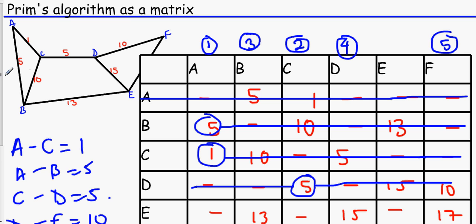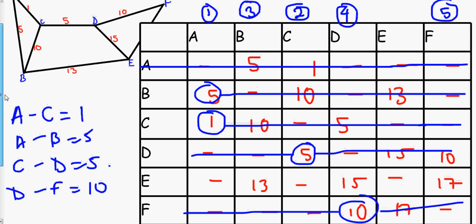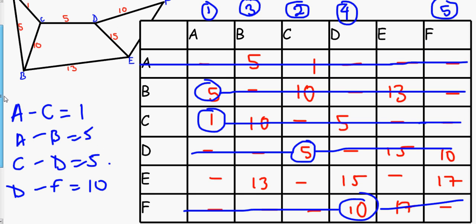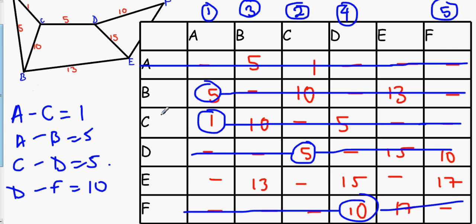Now, we need to find out the smallest numbers in between columns A, B, C, D and F. And that is 13. That's the smallest number out of this one. So, that's E to B. And that's 13. So, cross out all the numbers here. And that's your fifth vertex. But that's it. We've finished all the numbers.